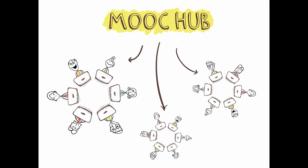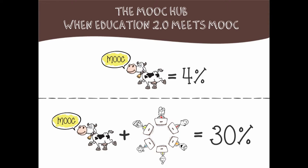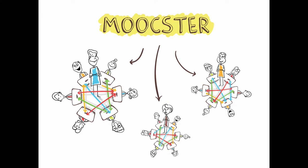What the universities did was make a meet-up — a place where students meet together and learn the MOOC. In this situation, the success is 30%: 30% get a certificate from the university. But what we did was say: let's connect Education 2.0 to the MOOC and see what happens.